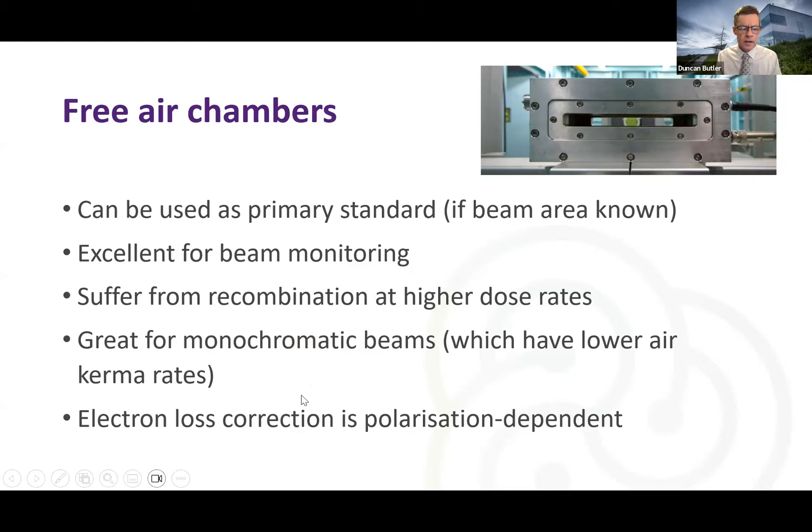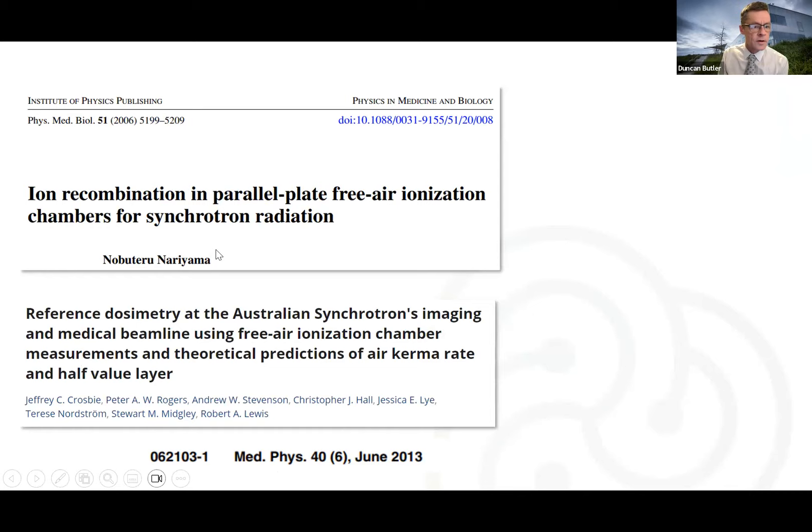They do have an electron loss correction. If you're using them as a primary standard, you want every secondary electron created in the air gap. You don't want them to reach the plates. And so you have to calculate what the loss is. And it turns out that depends on the polarization. And it's different for photoelectric and Compton. So it's quite a complicated calculation and most codes just assume random polarization. So to calculate that accurately can be problematic. But I will leave a couple of references here, one to a paper by Nariyama which talks about the polarization as well, and where Jeff Crosbie and Jess Lye used the primary standard on Australia's beamline.